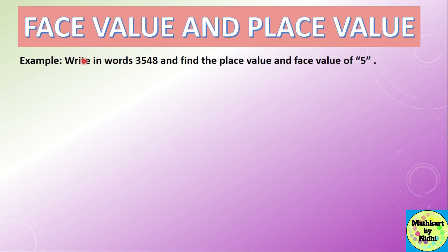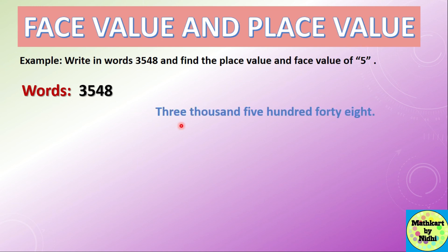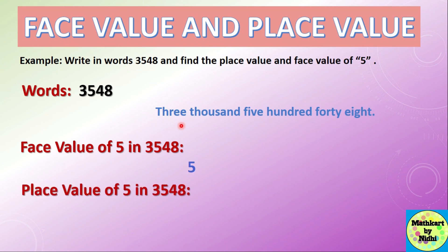One more example: write 3548 in words and find the place value and face value of 5. Written in words: three thousand five hundred and forty-eight. The face value of 5 is 5. The place value of 5 is 5 × 100 = 500, because 5 is at the hundreds place.